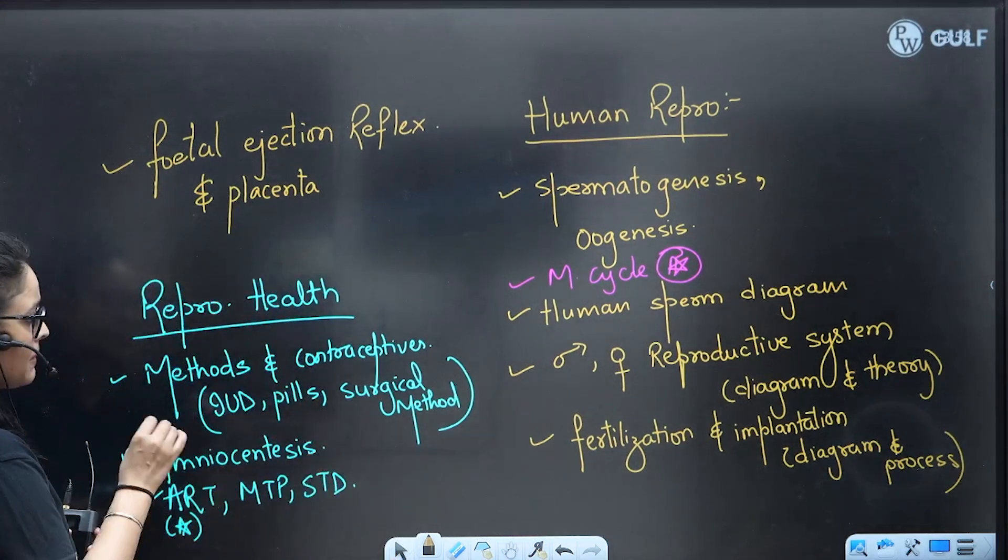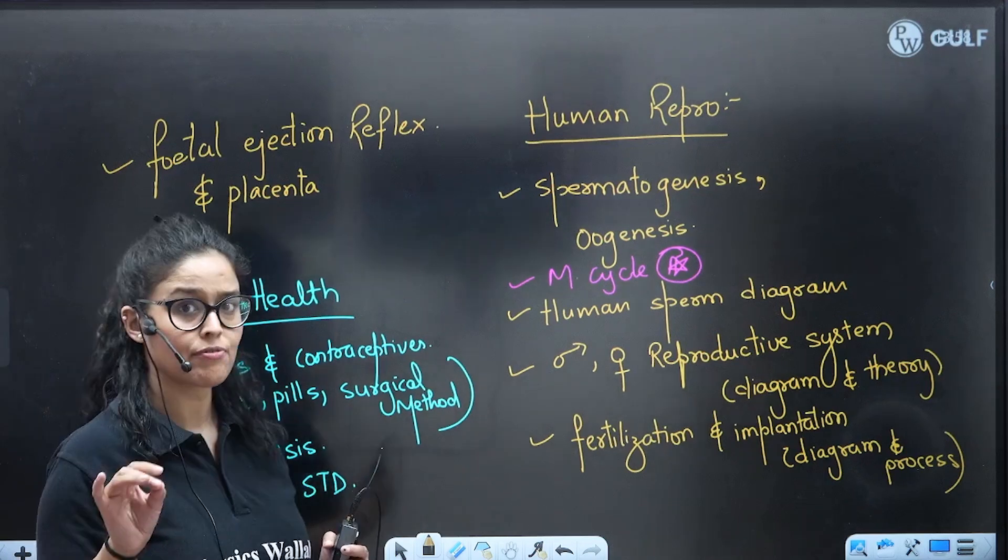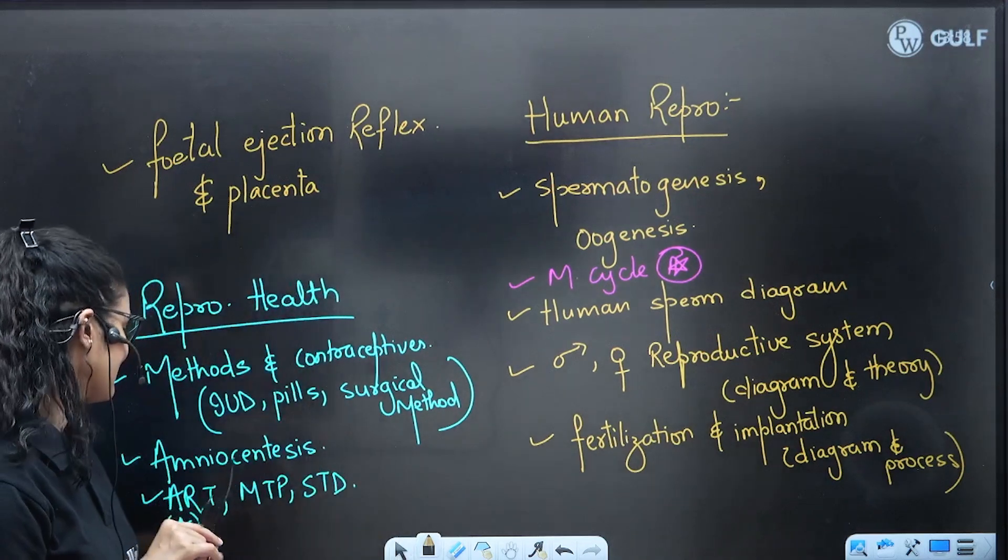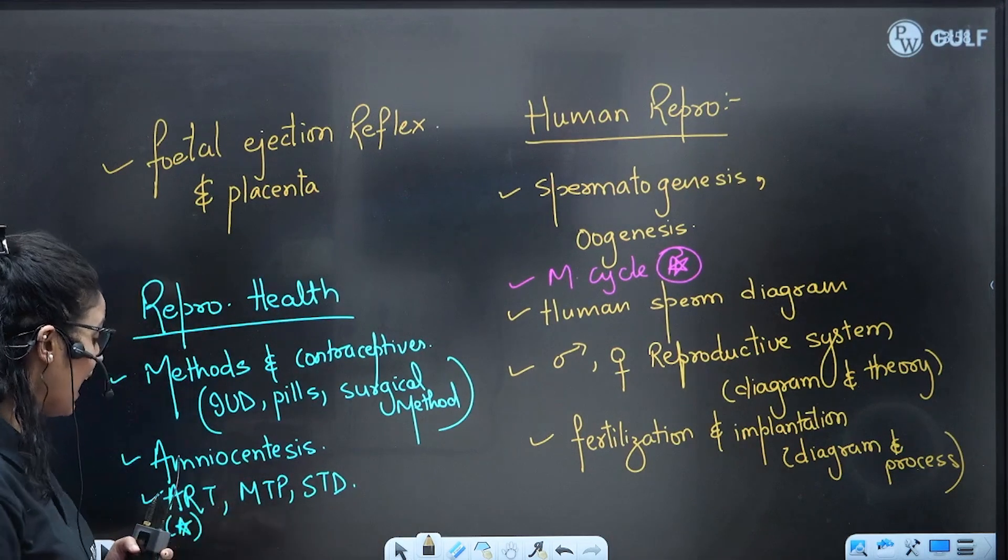Next is Reproductive Health methods. Contraceptives, again very important - IUDs, pills, and surgery. You'll find a lot of questions from these contraceptives specifically. Amniocentesis - they might ask you the definition and purpose.